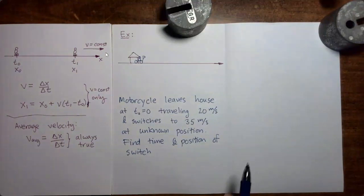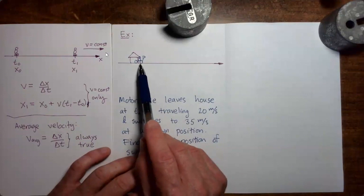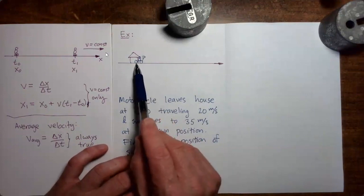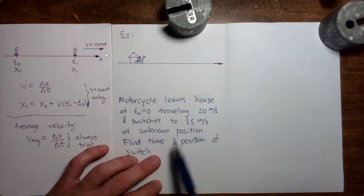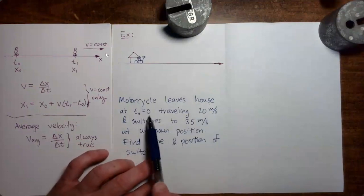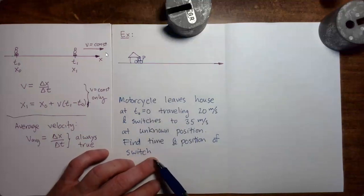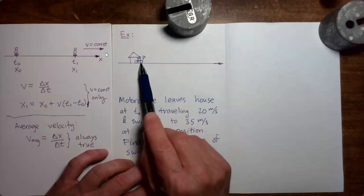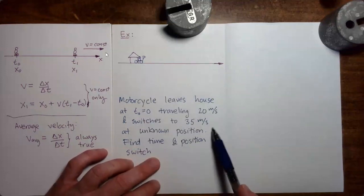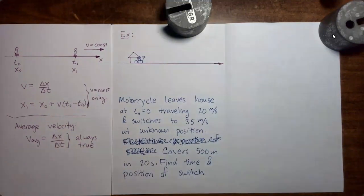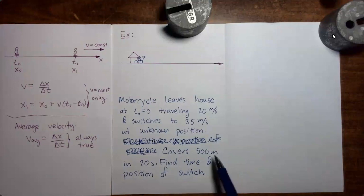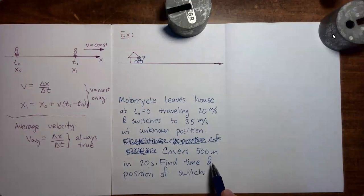We're going to do an example problem now. In this problem, we have a guy on a motorcycle and he's going to leave a house going towards the right. The motorcycle leaves the house at time t0 equals 0, traveling 20 meters per second. Then at some unknown time and position, the motorcycle rider is going to switch to 35 meters per second. The motorcycle covers a total distance of 500 meters in 20 seconds. We want to find the time and position of the switch.